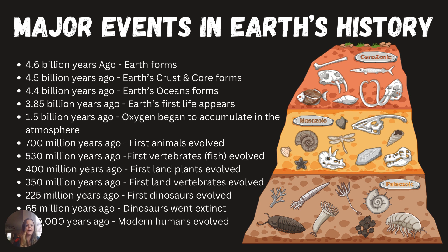400 million years ago is when we saw the first land plants evolve — plants were on land before animals were. From 1.5 billion years to 400 million years, that's how long it took to get plants on land. Then 350 million years ago we saw vertebrates show up on land, only 50 million years after plants appeared, and those vertebrates would have been eating the plants and each other. 225 million years ago dinosaurs evolved, and they dominated the Earth for millions of years, until they went extinct during the mass extinction at the Cretaceous-Tertiary boundary, 65 million years ago. Modern humans evolved 130,000 years ago.